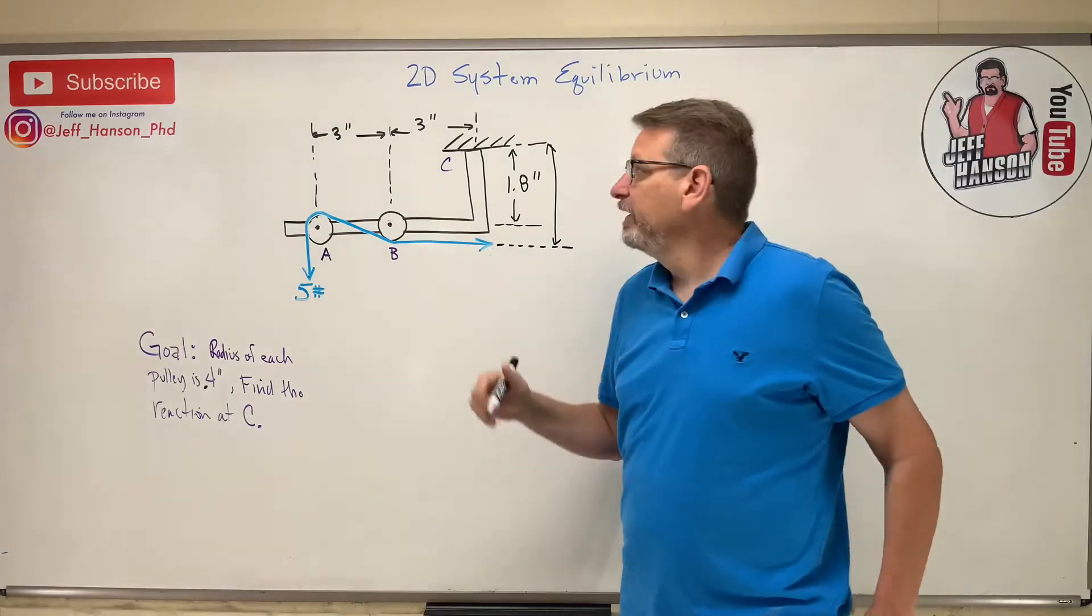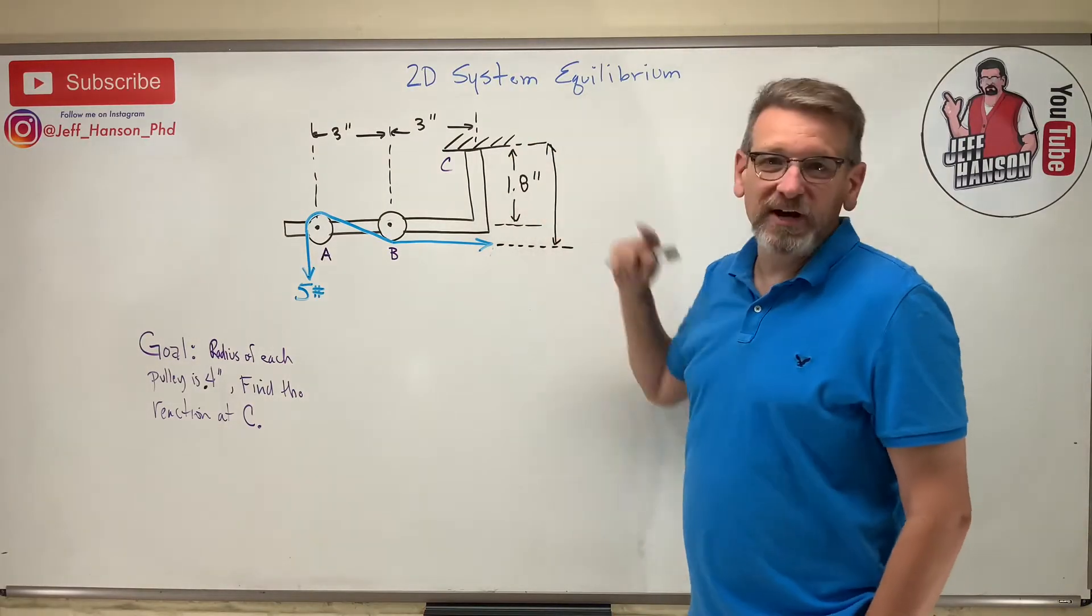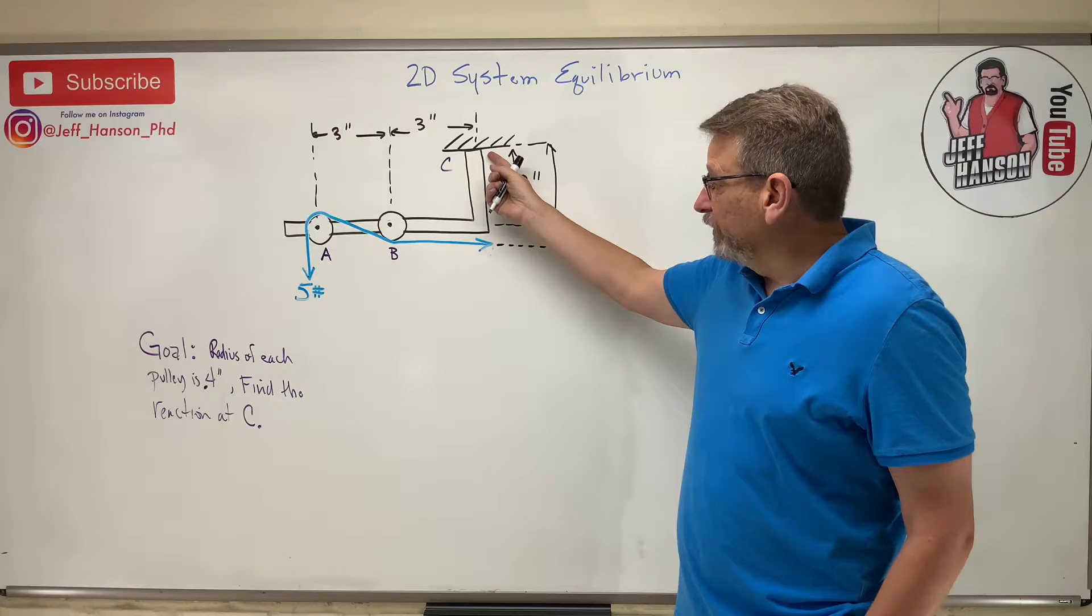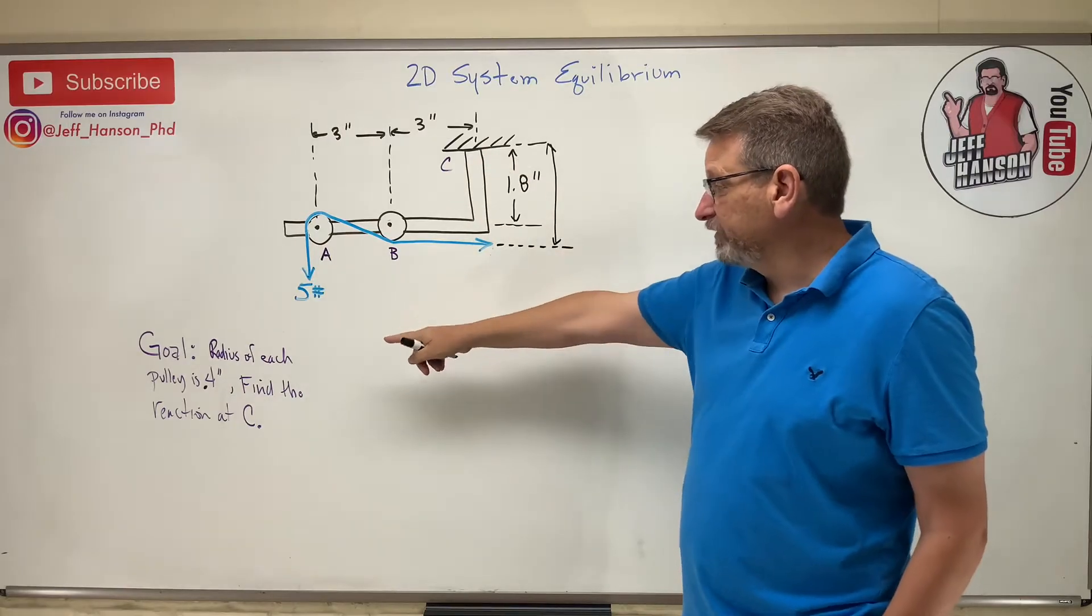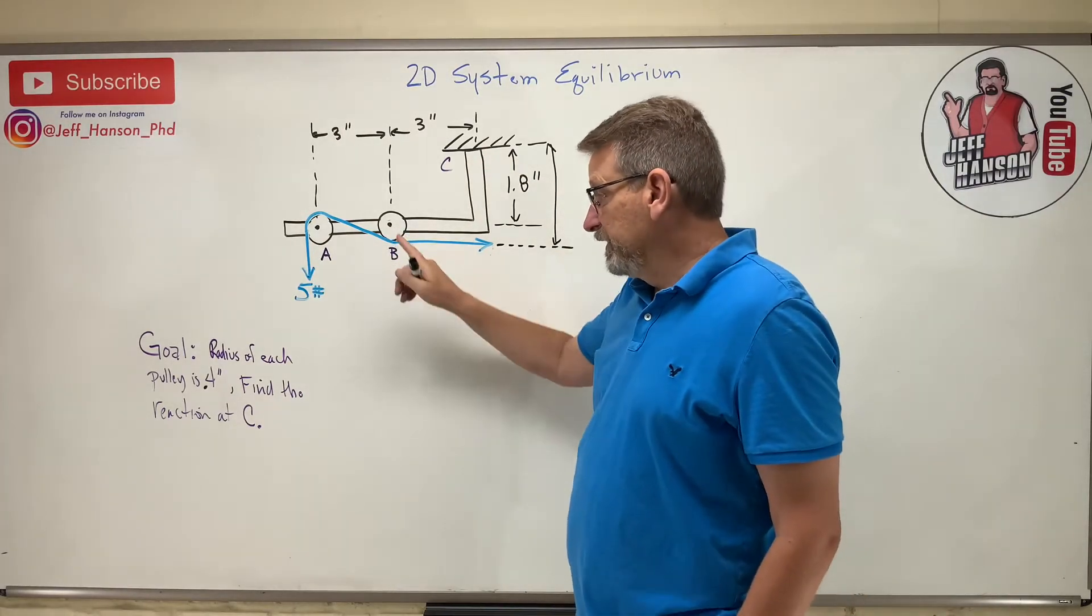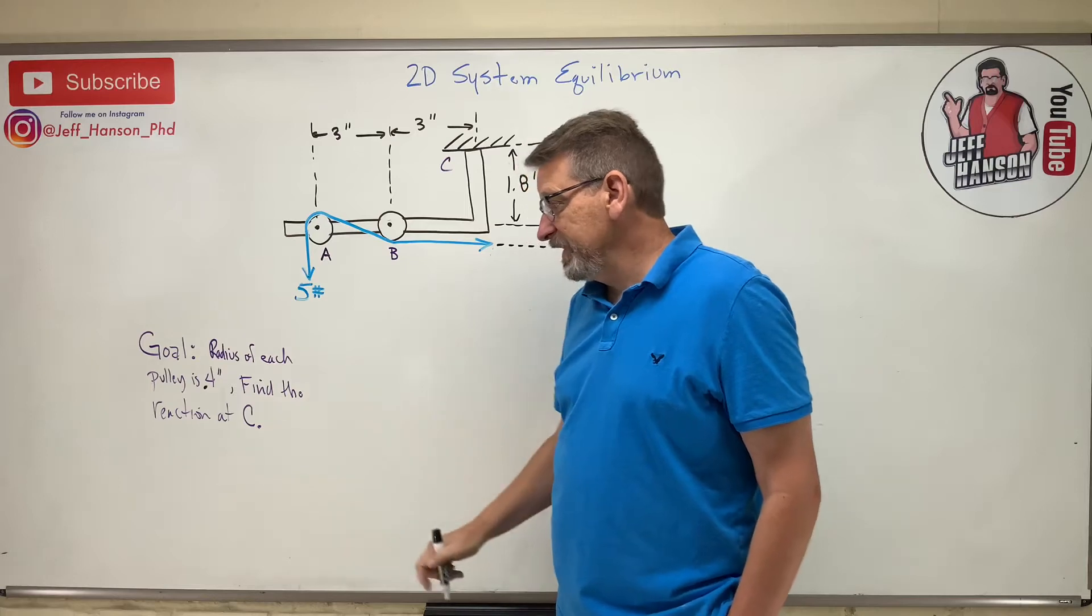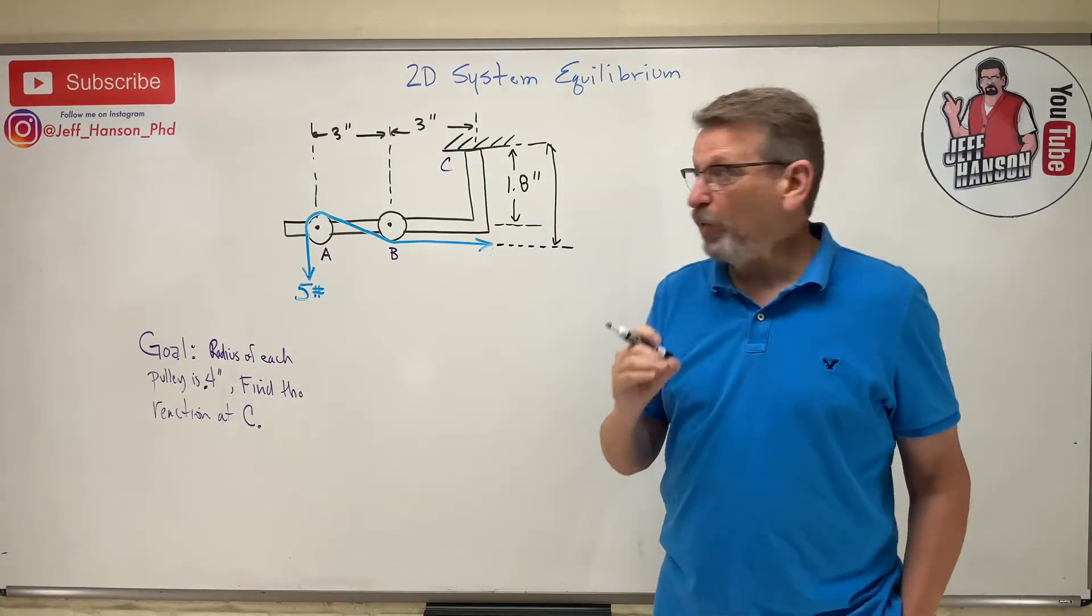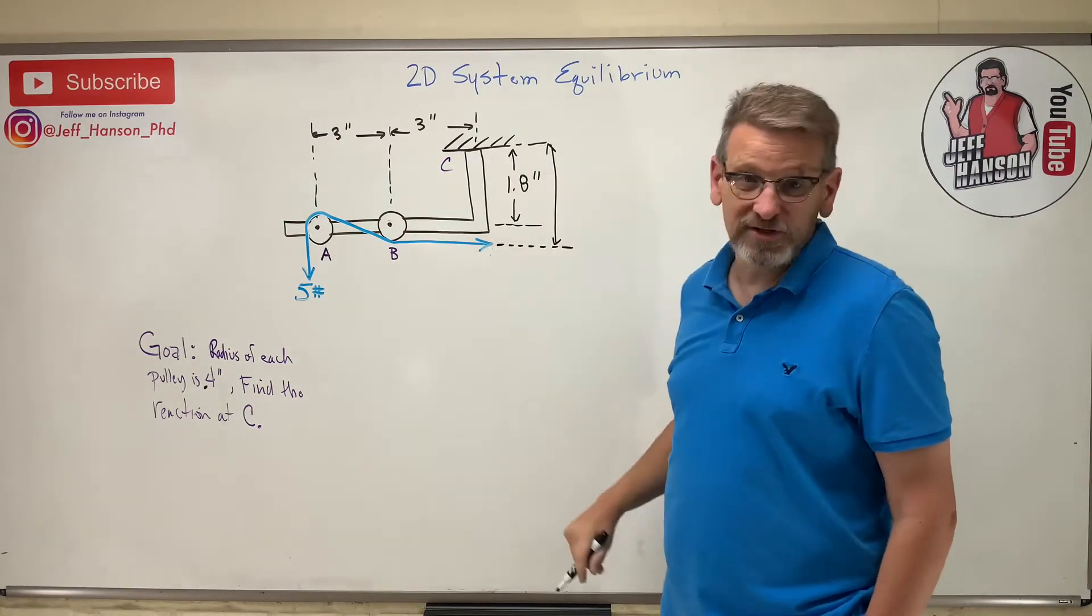This is concreted maybe into the wall or it's welded on. They tell us what the radius of each one of these pulleys is, 0.4 inches, and they ask us to find the reaction at point C, which is up here where this is concreted into the wall.